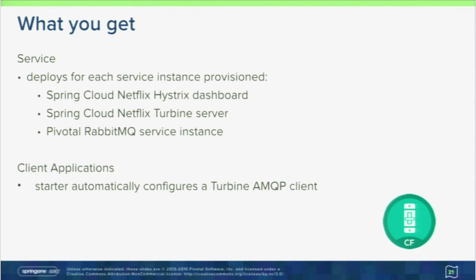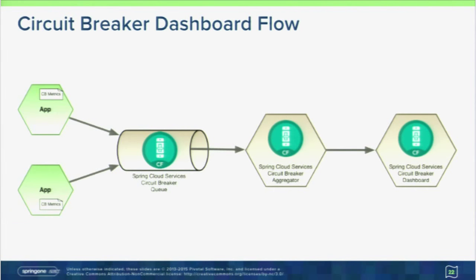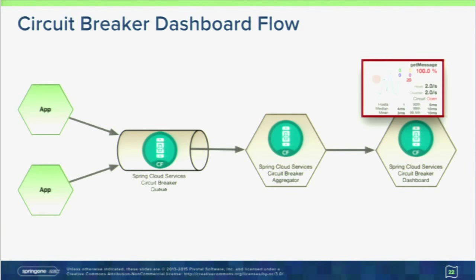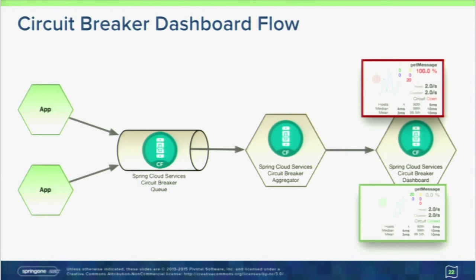Client applications send metrics about how things are working onto the RabbitMQ queue. Turbine takes all metrics from all client applications, aggregates them into one place, and the Hystrix dashboard reads from there — giving you a nice UI showing what services are up or down. Without Spring Cloud Services, you'd have to stand up the Hystrix dashboard yourself, manually enter a URL for the metrics stream, stand up Turbine separately for multiple services, and enter that Turbine URL. With Spring Cloud Services, all of that is handled — the Turbine piece is wired through the queue, everything is bound appropriately, and when you open the Hystrix dashboard you see metrics directly without entering any URLs.